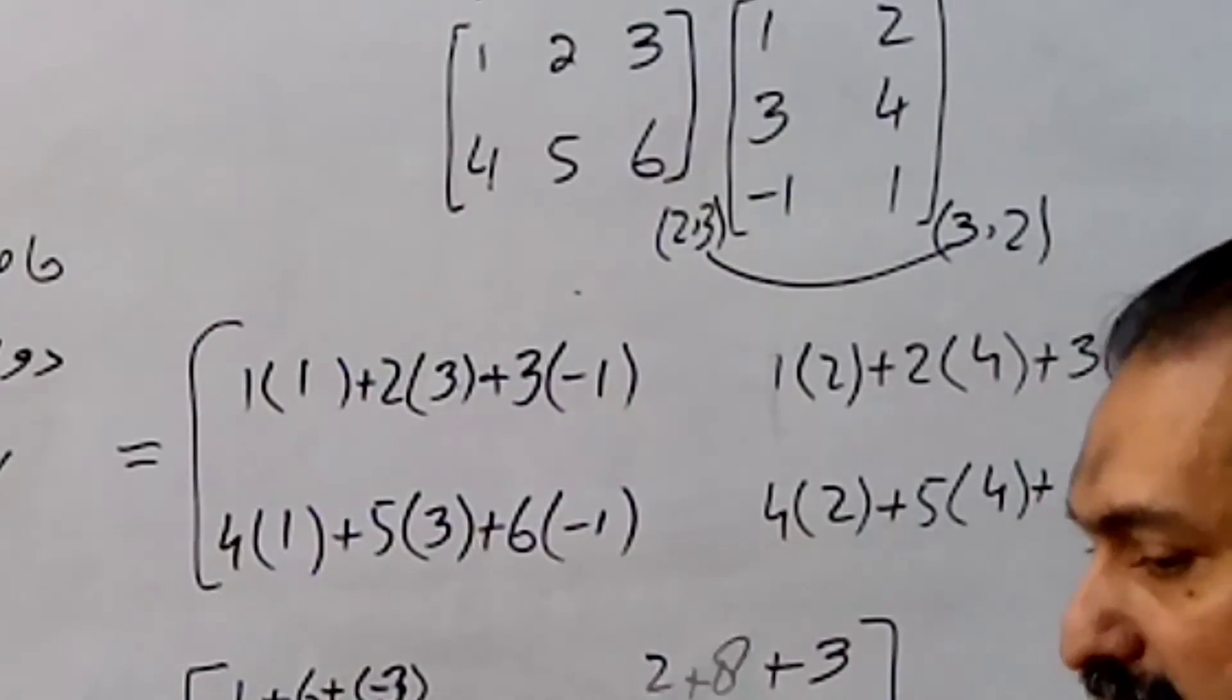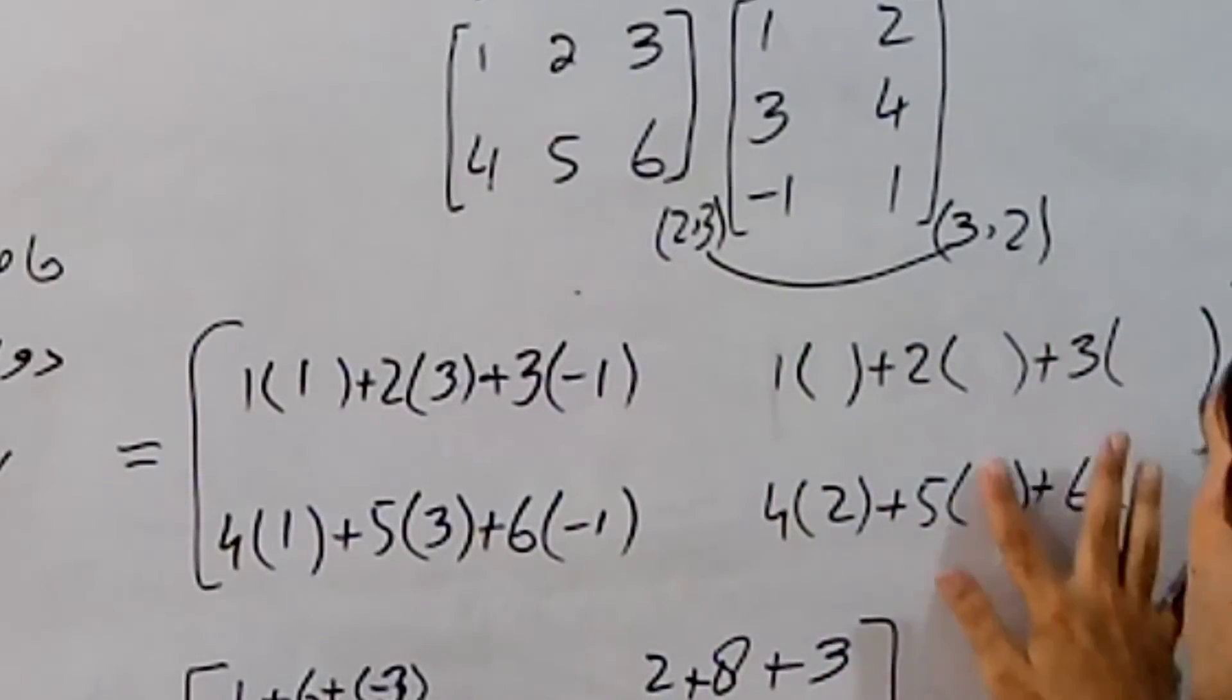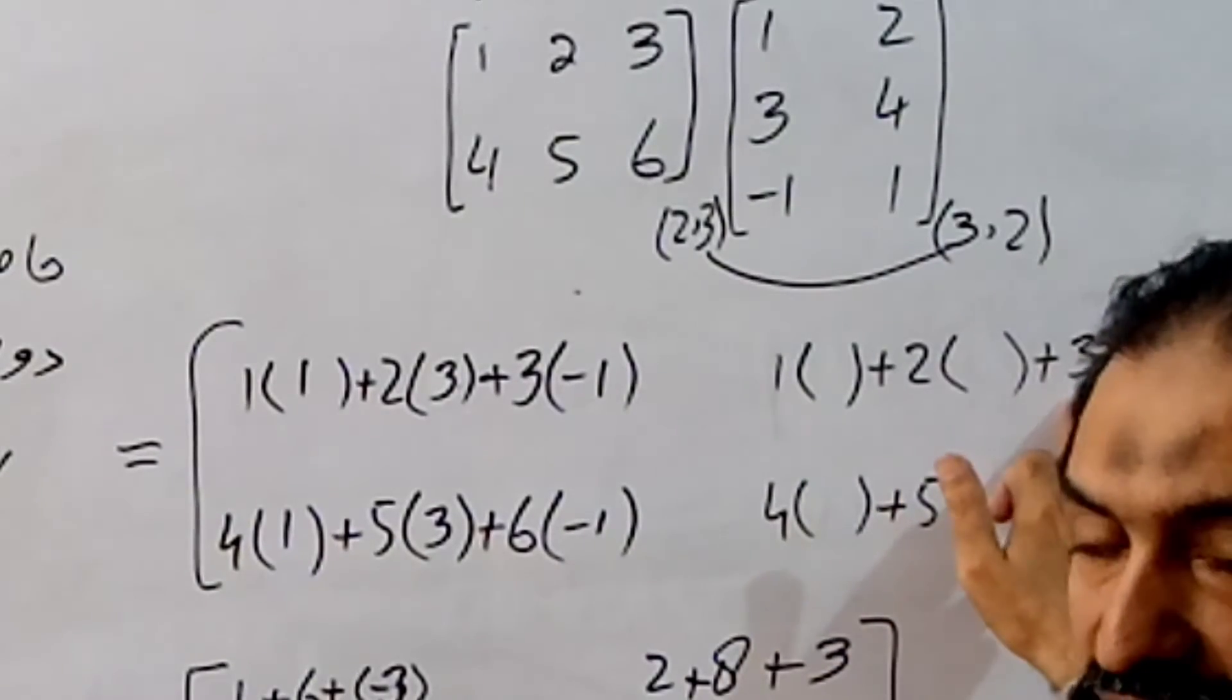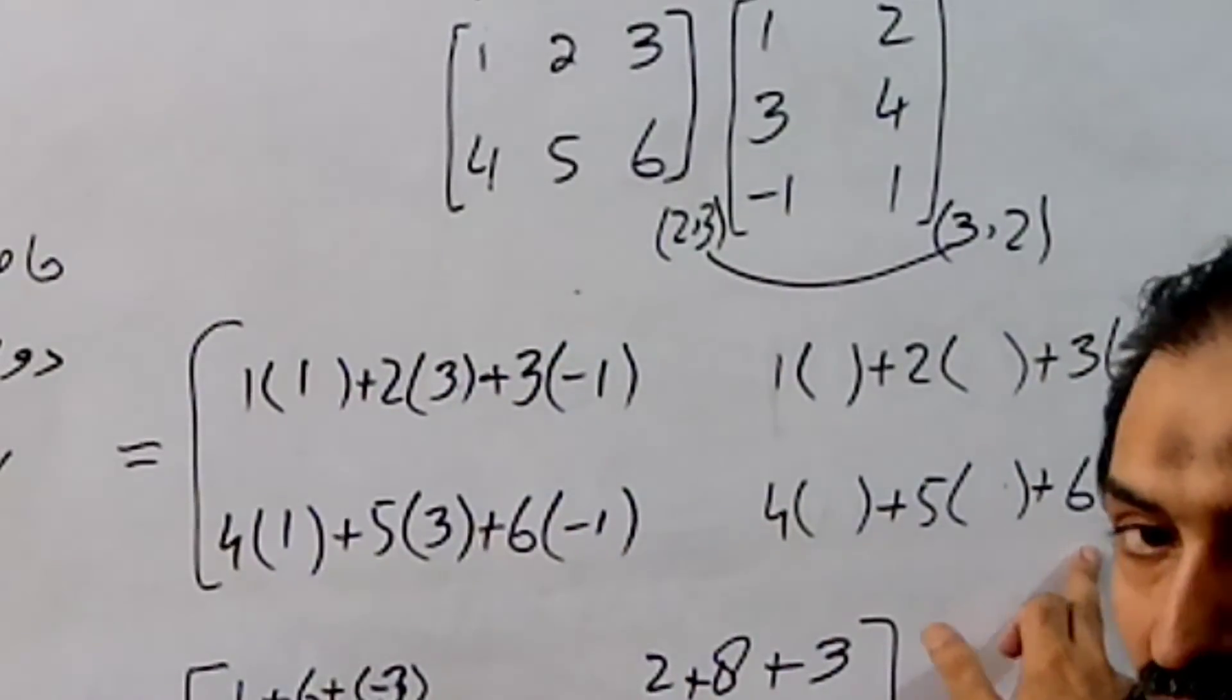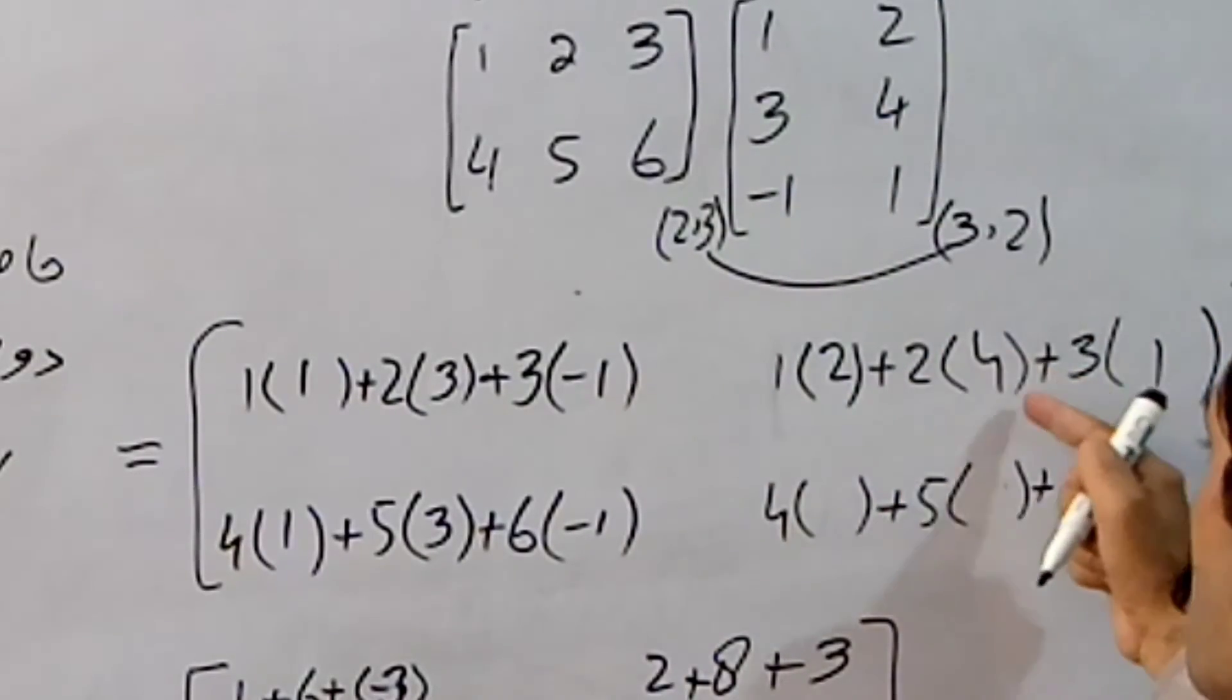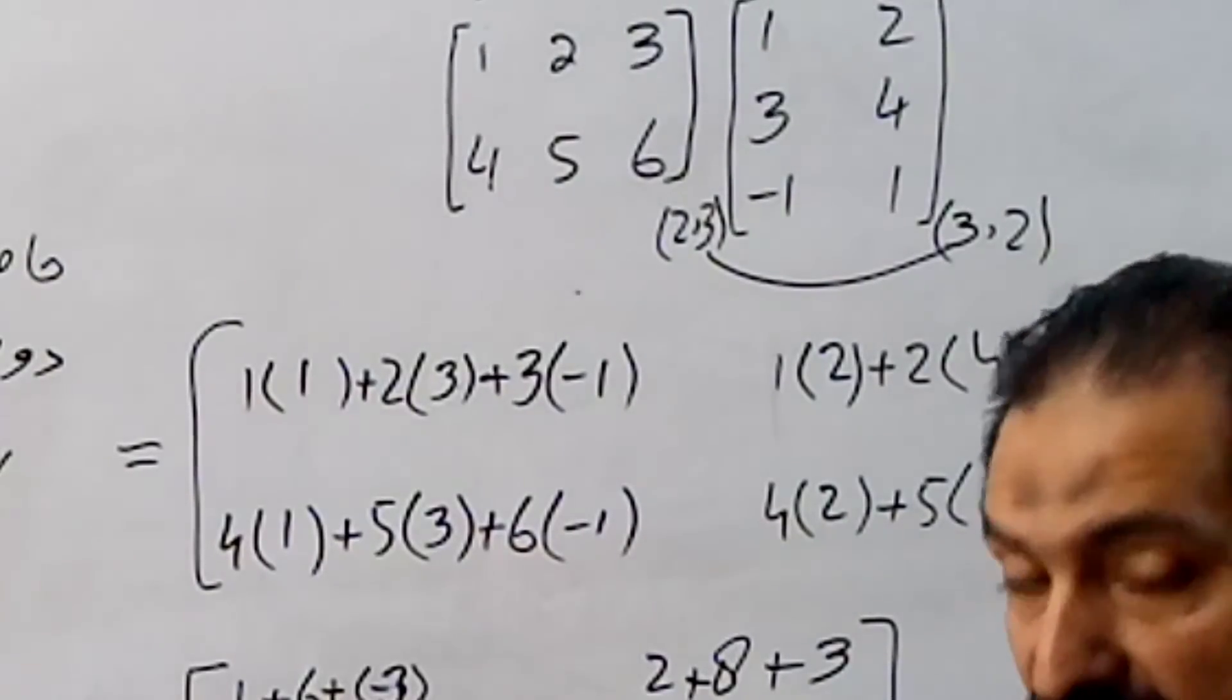I will show you this. I have removed this. You can see that I have removed this. One, two, three, it is one, two, three. Plus, here is four, five, six. Here is four, five, six. Here is the second column. Here is the two, four, and one. After that I have written down the final answer.